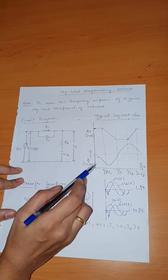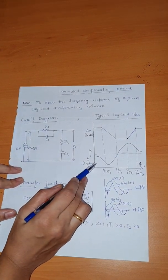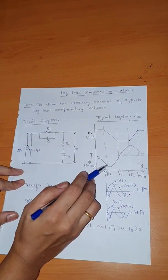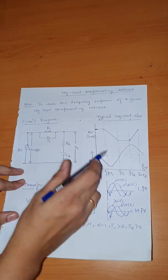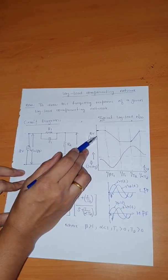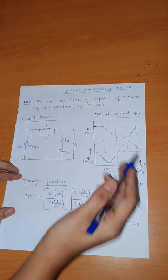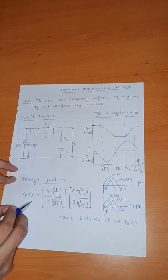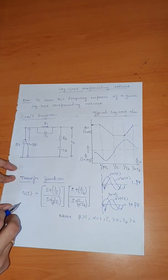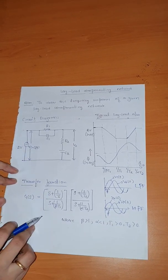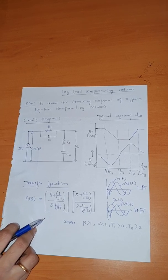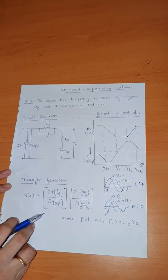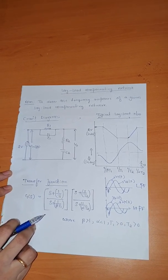This is the expected graph for the lag-lead compensating network — showing the phase plot and the gain plot. This is also the transfer function for the lag-lead compensating network. Now we will see the experimental arrangement for the conduction of this experiment.